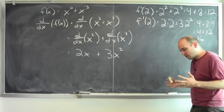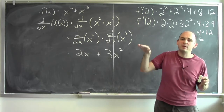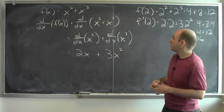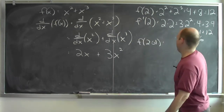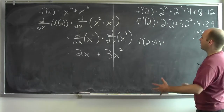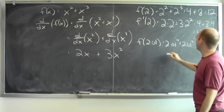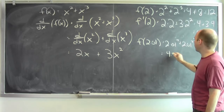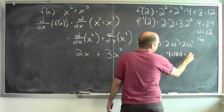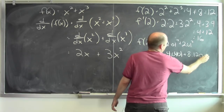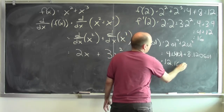So what does that mean? The derivative at the point 2 is reflecting how wiggling the input of 2 would affect the output. What happens if I wiggle the input of 2 by a little bit? If I calculate f of 2.01 — plugging in 2.01 for x — I get 2.01 squared plus 2.01 cubed. 2.01 squared is 4.0401, and 2.01 cubed is 8.120601. Adding those together, I get 12.160701.